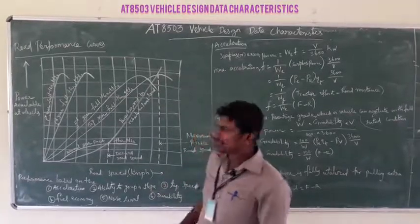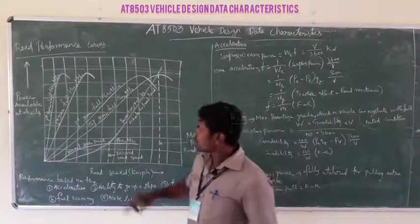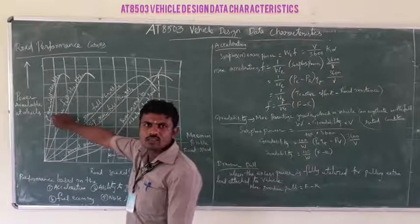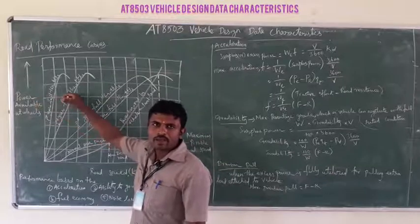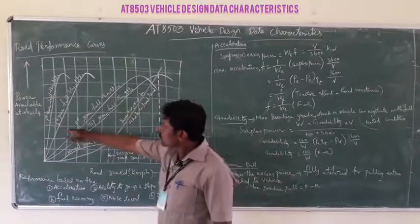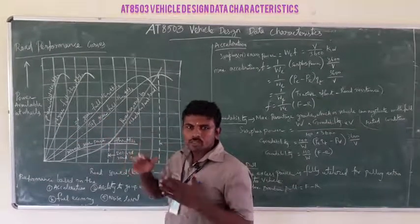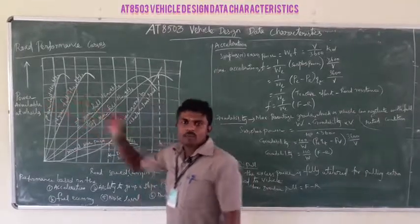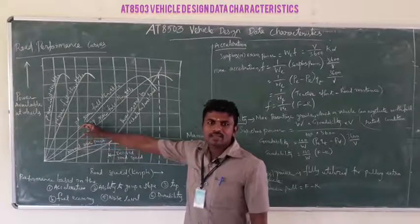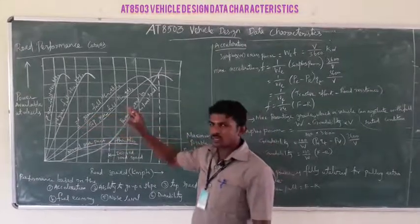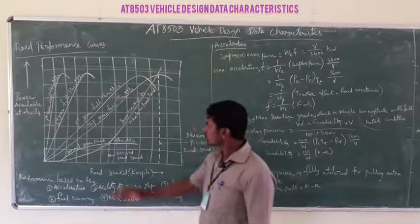With the help of that we can plot the curve based on speed. In the first gear, what is the maximum speed with power availability at the four wheels? For the second gear, what is the maximum speed and total power availability at the wheels? What is the speed for the third gear, and what is the speed for the top gear? Now we have gears up to fifth gear for cars.